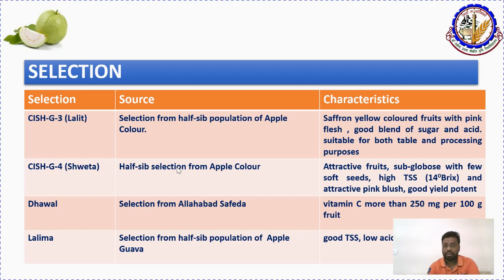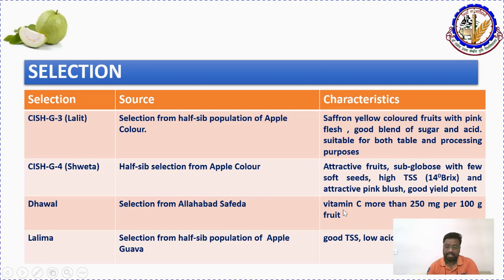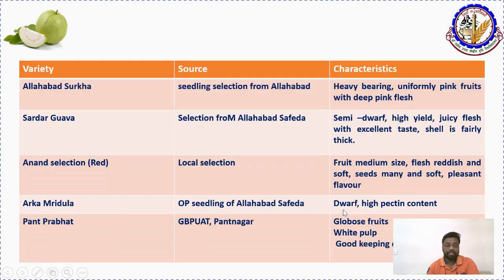When a superior seedling is found in a seedling population, multiplied clonally and maintained as a variety, that is seedling selection. Examples include Lalit, Shweta, Dhaval, and Lalima — all developed from CISH, the Central Institute for Subtropical Horticulture, located in Lucknow, which is the nodal center for guava research. Their parentage and characteristics are documented.